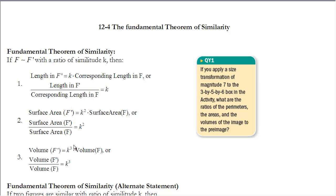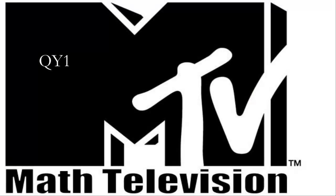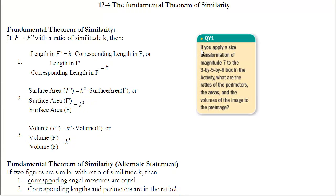We can relate that to surface areas and volumes. Surface area is two-dimensional, so any area on F prime, the image, will always be equal to k squared times the pre-image area. As a ratio, image over pre-image equals k squared. For volumes, the volume on the image will be k cubed times the volume of the pre-image, so the ratio image over pre-image equals k cubed.